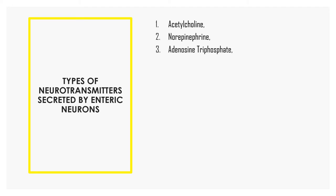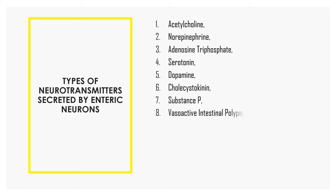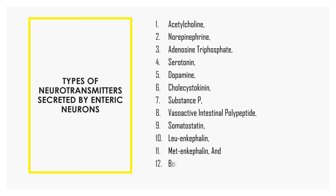There are 12 types of neurotransmitters secreted by enteric neurons: acetylcholine, norepinephrine, adenosine triphosphate (ATP), serotonin, dopamine, cholecystokinin, substance P, vasoactive intestinal polypeptide, somatostatin, leu-enkephalin, met-enkephalin, and bombesin. These are all the neurotransmitters secreted by the enteric neurons of the enteric nervous system, which is the nervous system of the GI tract.